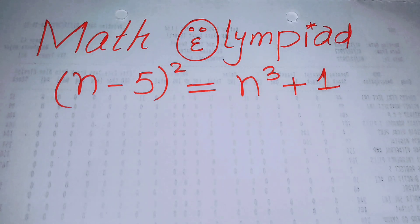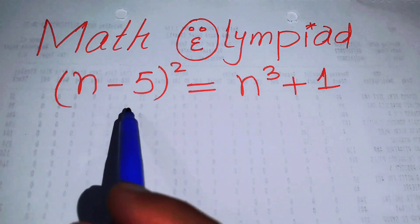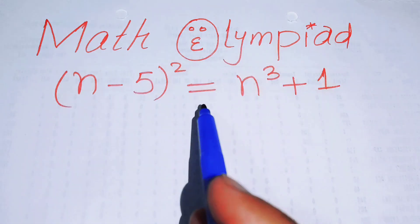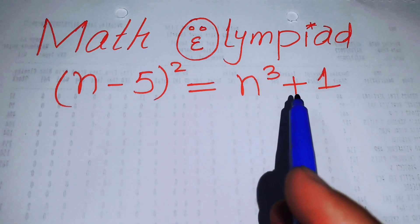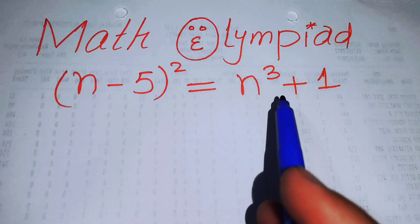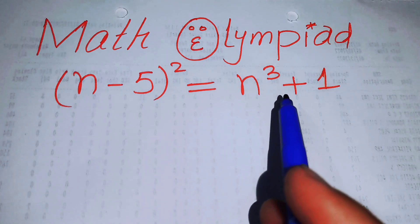Hello everyone, welcome back to the Map of Mathematics. In this video we are going to solve this nice algebra problem: (n - 5)² = n³ + 1. We will solve this problem for the values of n.